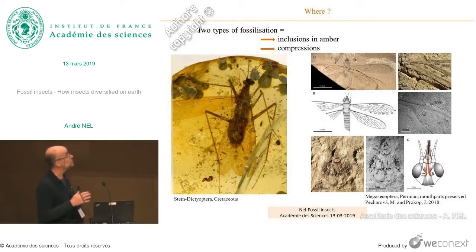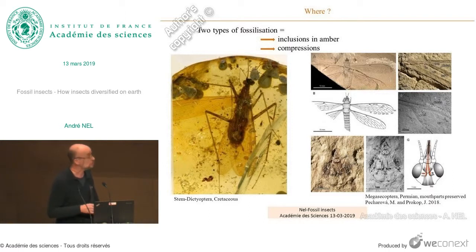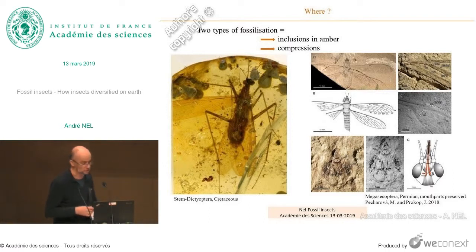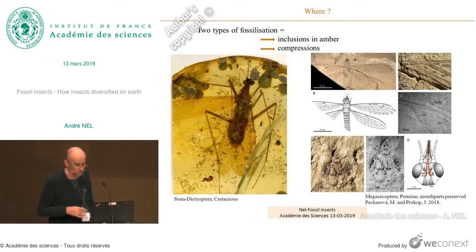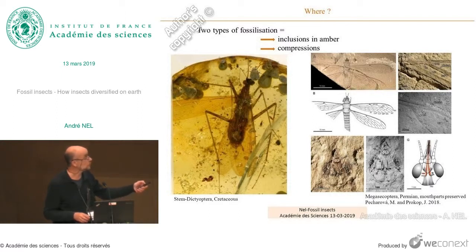Fossil insects are known in two types of fossils, and they are very frequent. We have fossils as compressions in rocks — that is, mainly lacustrine sediments — and both types can give much information. For instance, we can reconstruct the mouth parts of this fossil from the Permian.